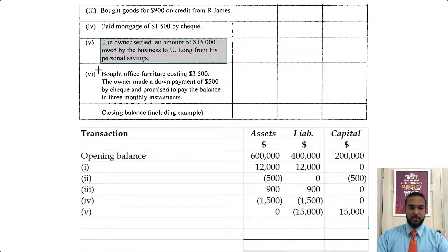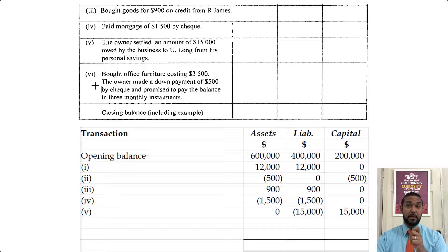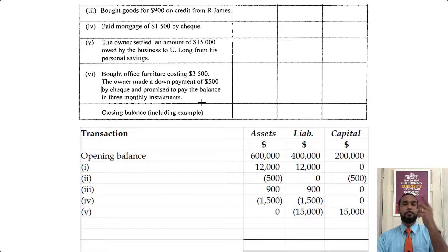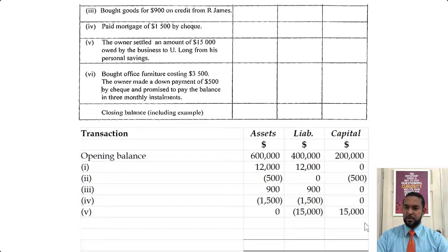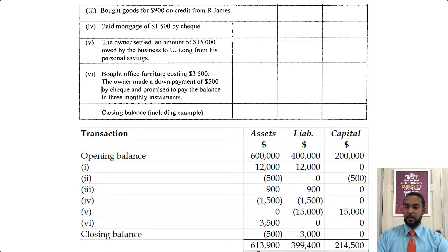The final transaction: bought office furniture costing 3,500. Assets go up by 3,500. The owner made a down payment of 500 by check, so assets also go down by 500 — you used up money from the bank. And he promised to pay the balance in three months. If you bought something for 3,500 and only paid 500, you still owe 3,000 — so that's your liability going up by 3,000. The net increase in assets is 3,000, so assets and liabilities are both increasing by the same amount. That gives totals of 613,900 for assets, 414,500 for liabilities — add those together and you get back 613,900.